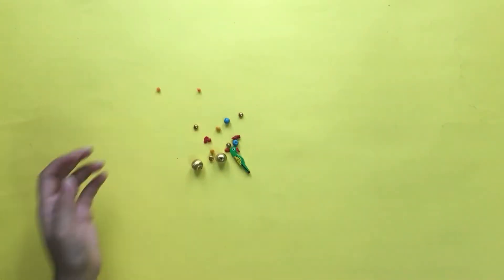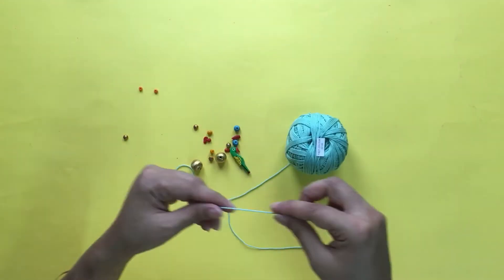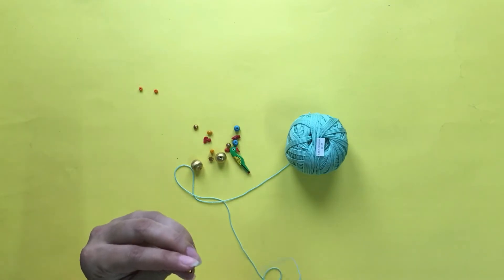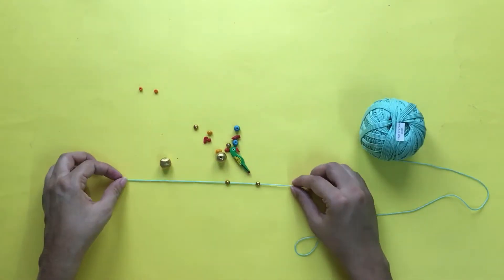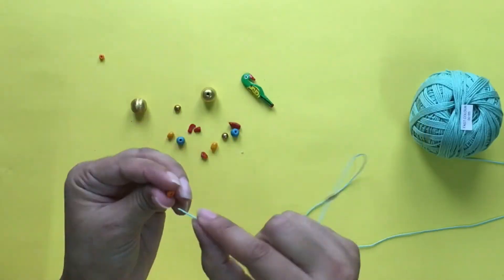For the third Rakhi design, I am using a peacock bead with many other small to large beads and a cotton thread which may be of any color you like. Take the cotton thread and start putting the beads into it as shown.